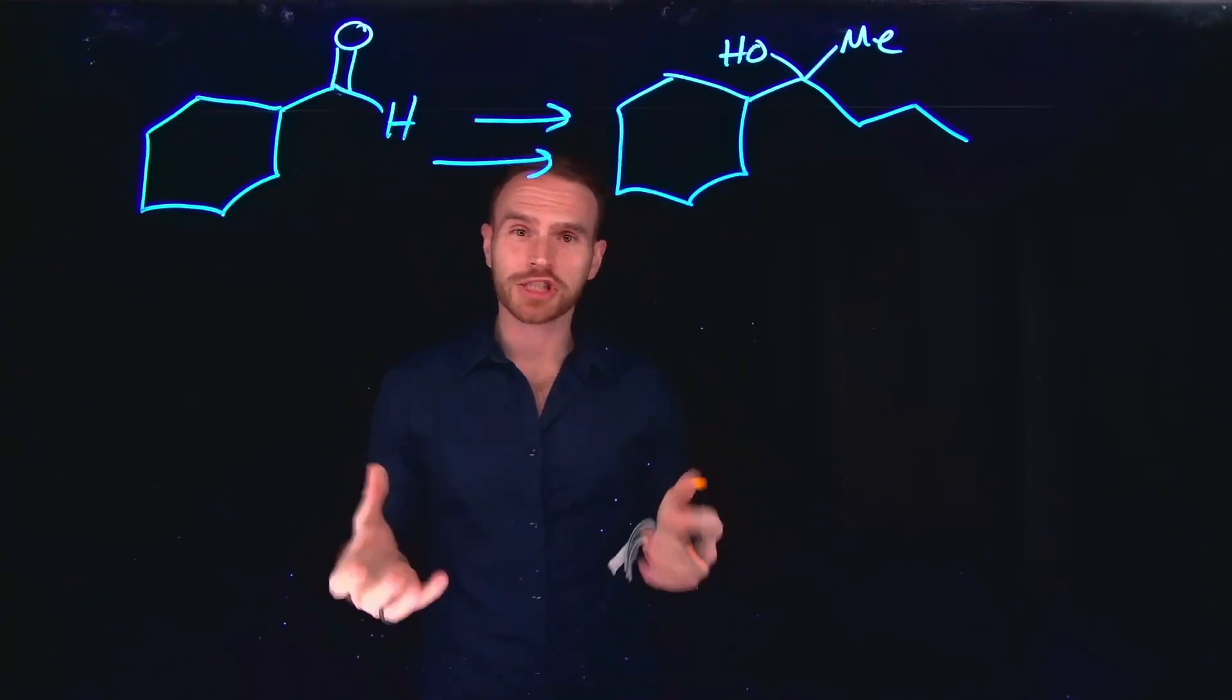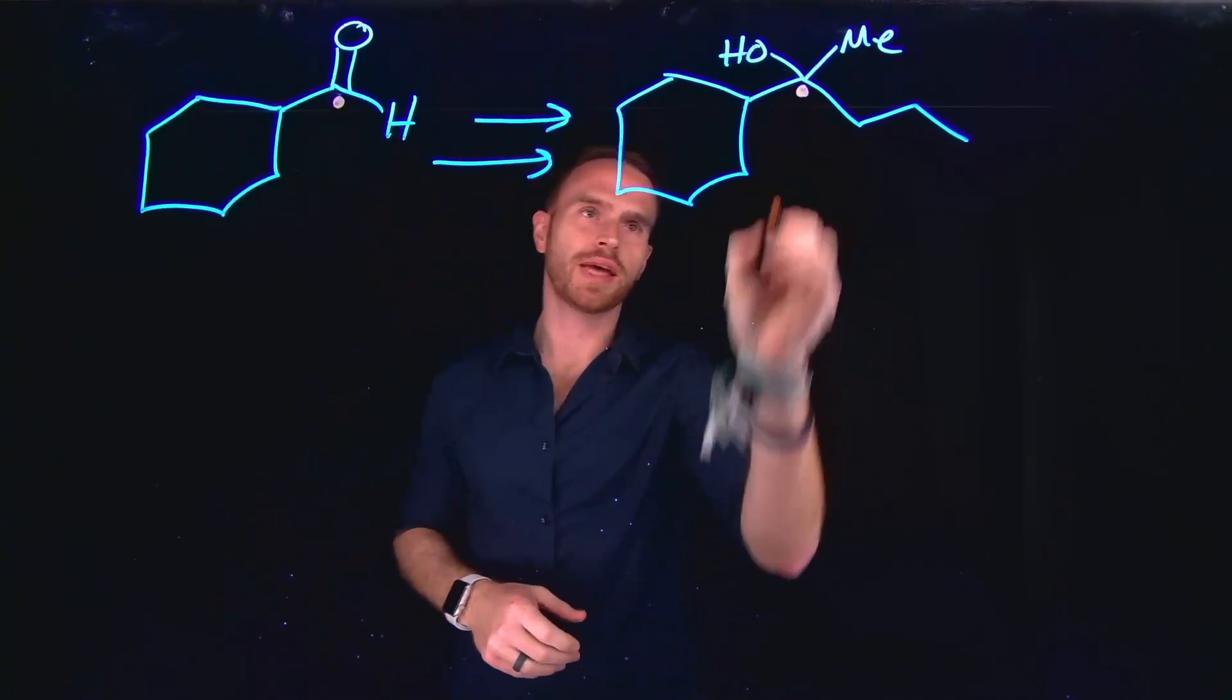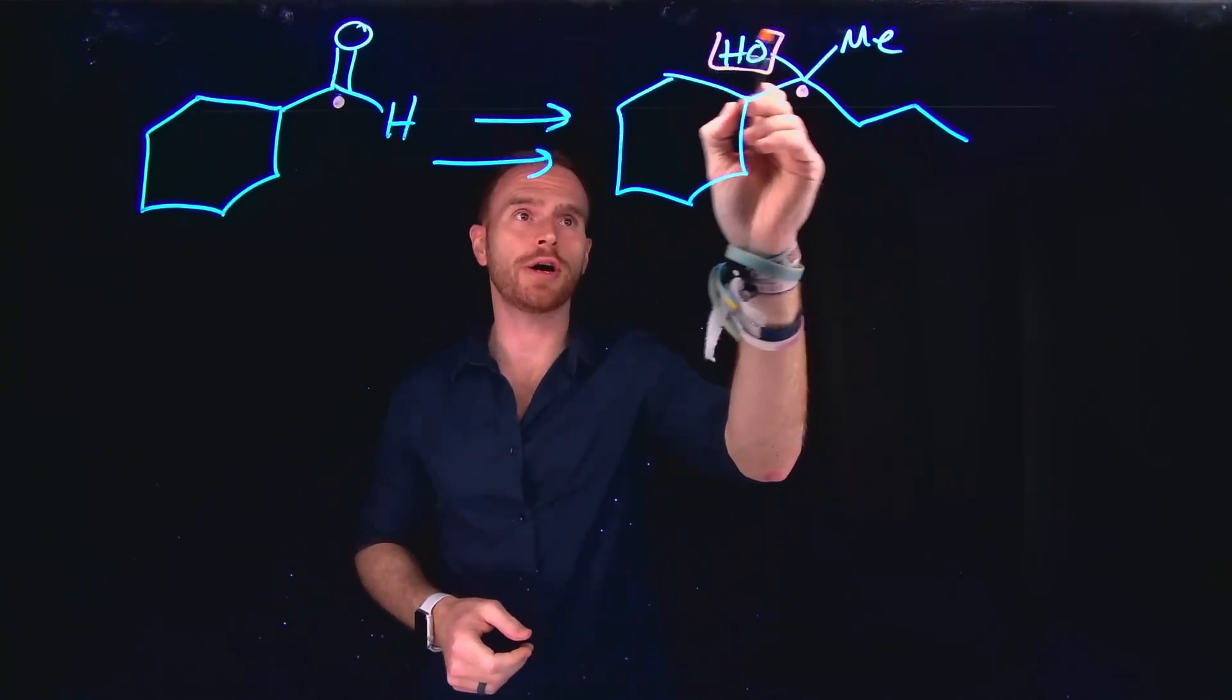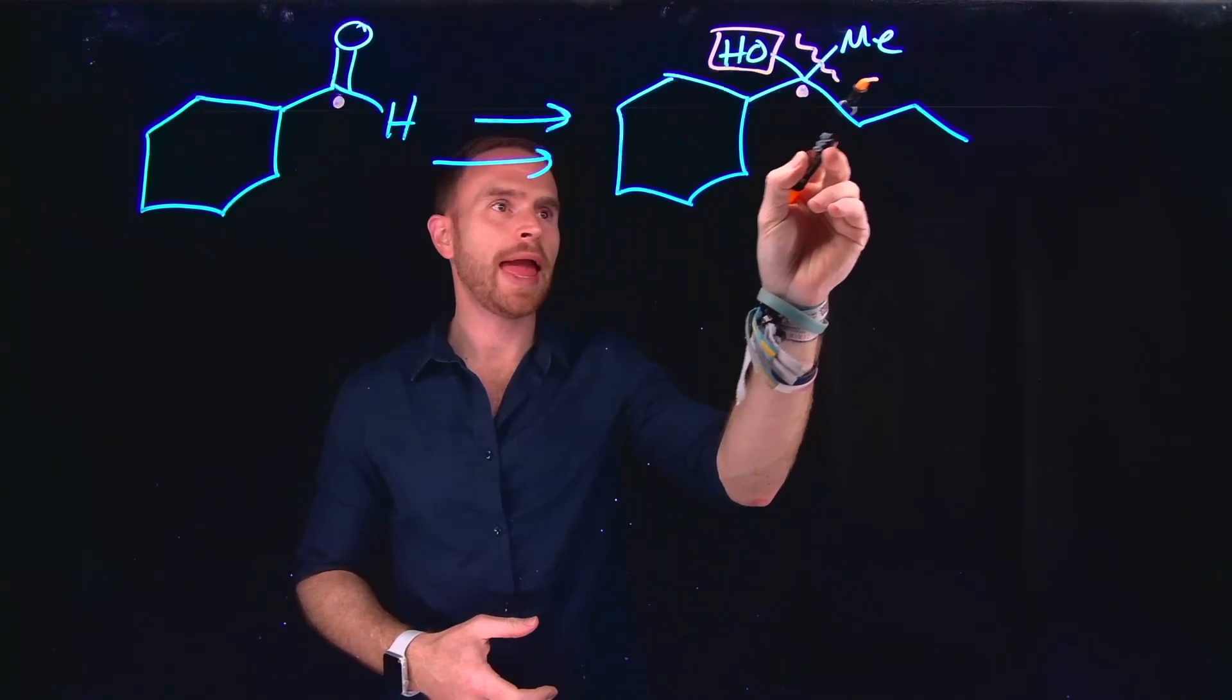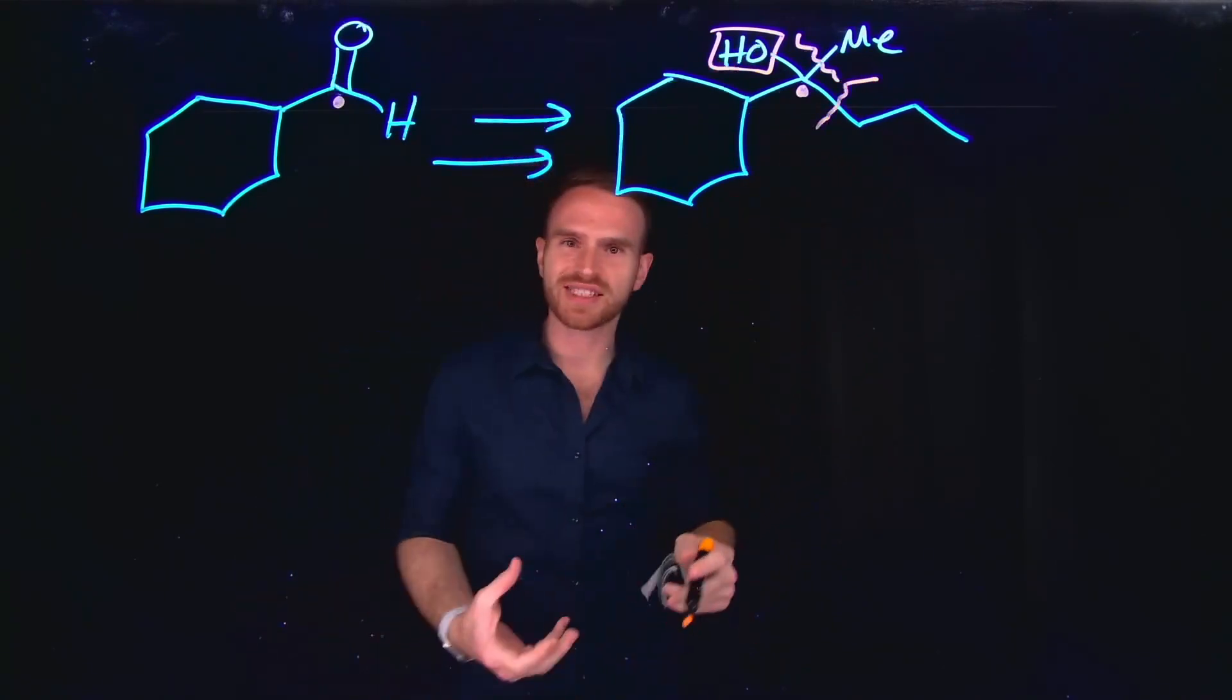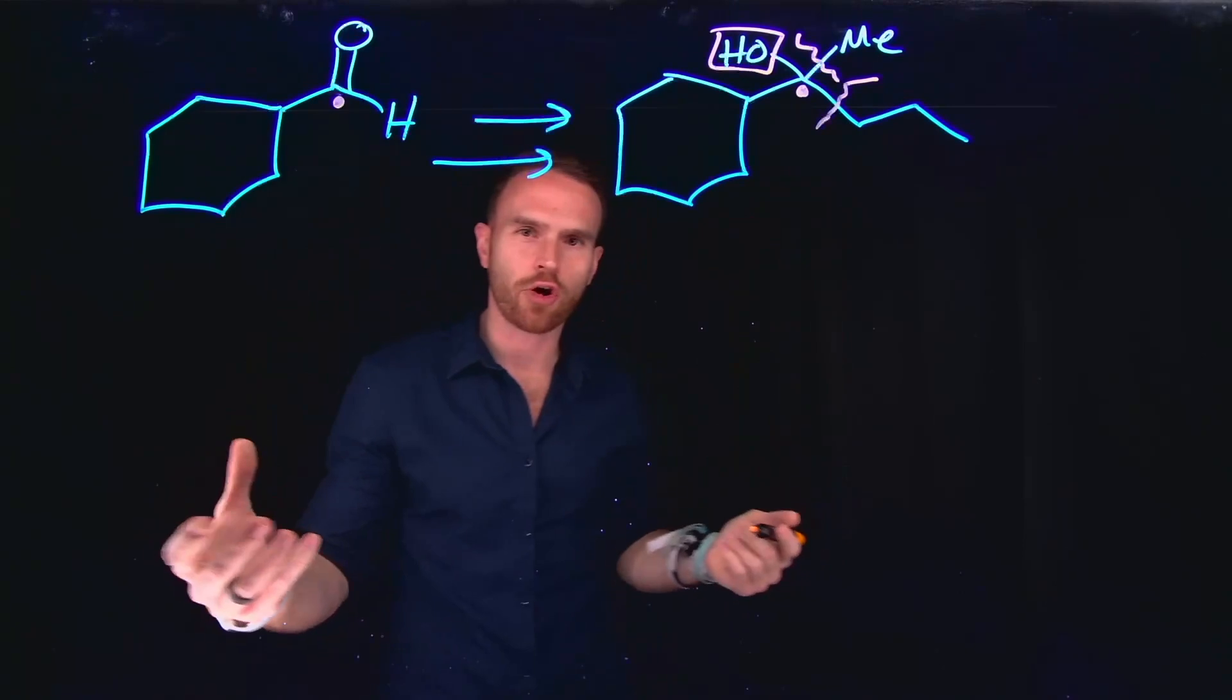For the first question, I see that the carbonyl carbon has been transformed into a carbon that contains a tertiary alcohol on it. Importantly, this has been through the addition of a methyl group and a propyl group. So I see all the different bond-breaking and making that must have occurred at that carbonyl carbon.